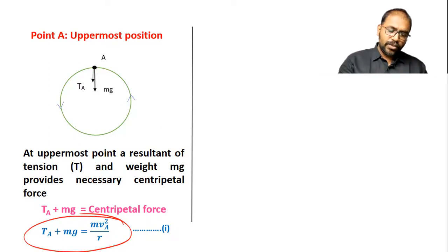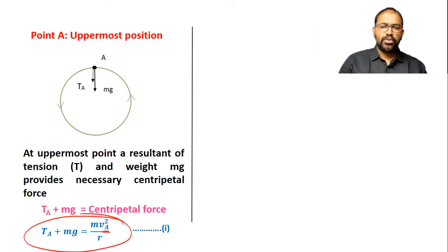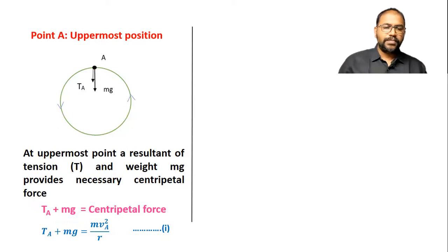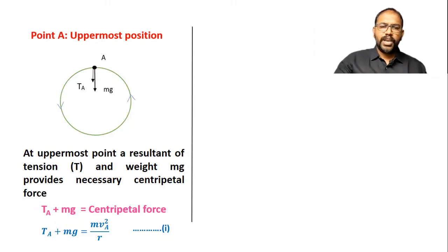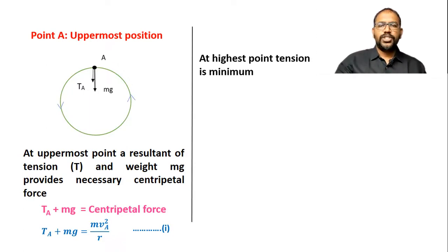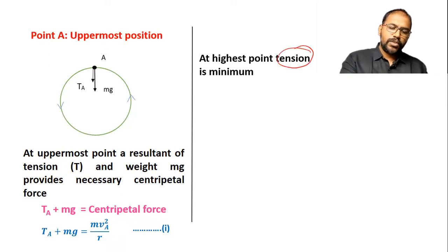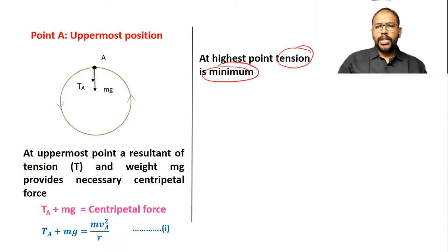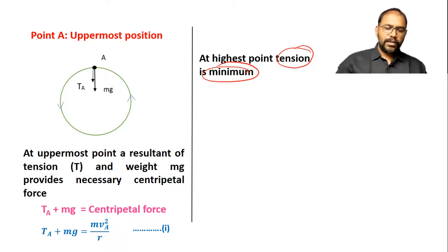I specifically use vA here because speed at every point is different, so we have to specify the point. Speed at point A is vA. This is equation 1. Now we have to process this equation to obtain the formula for speed at A. At the highest position, tension is minimum — minimum means 0, not less than that. So we consider tension at A as 0.